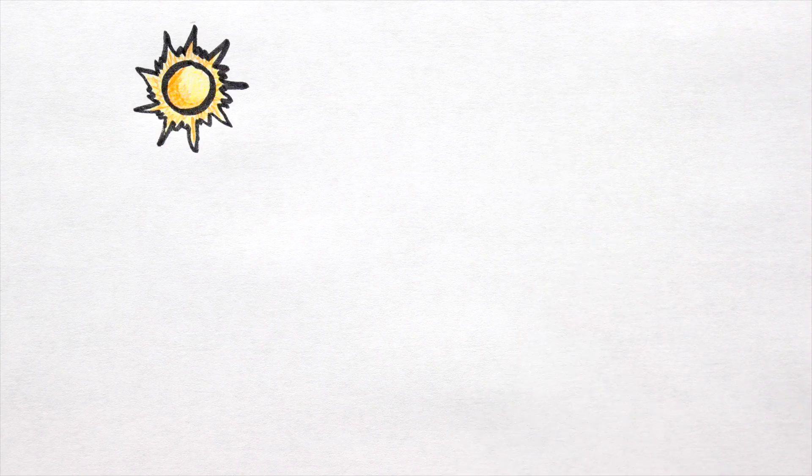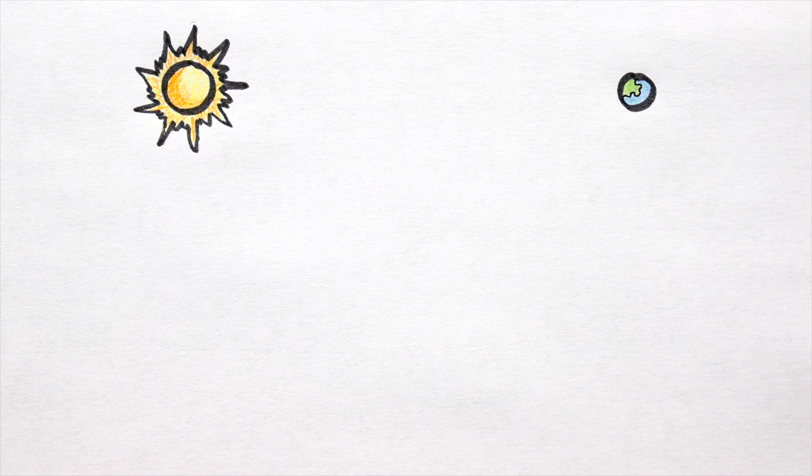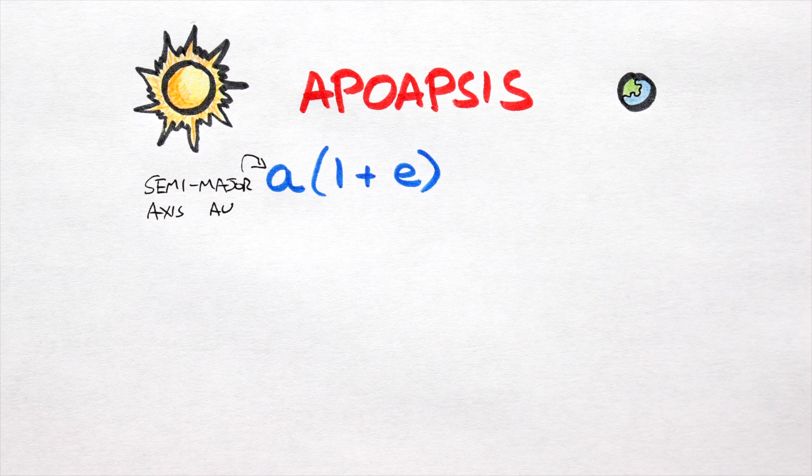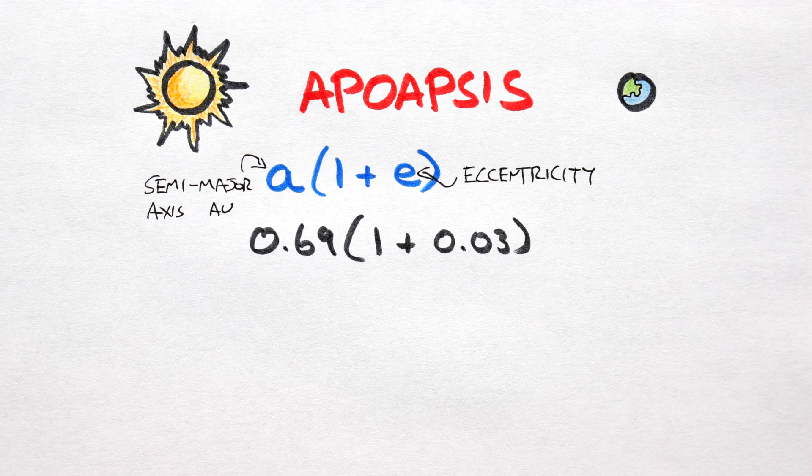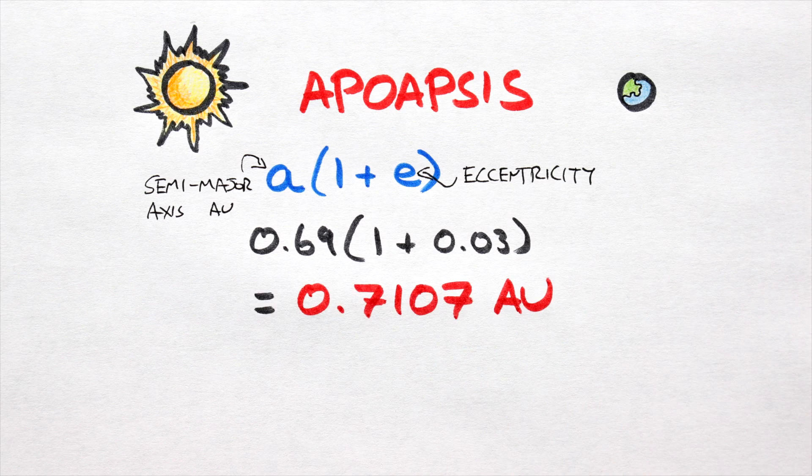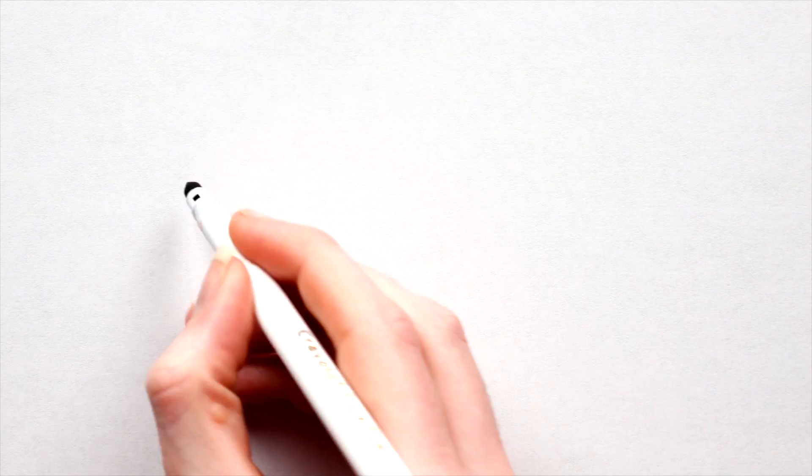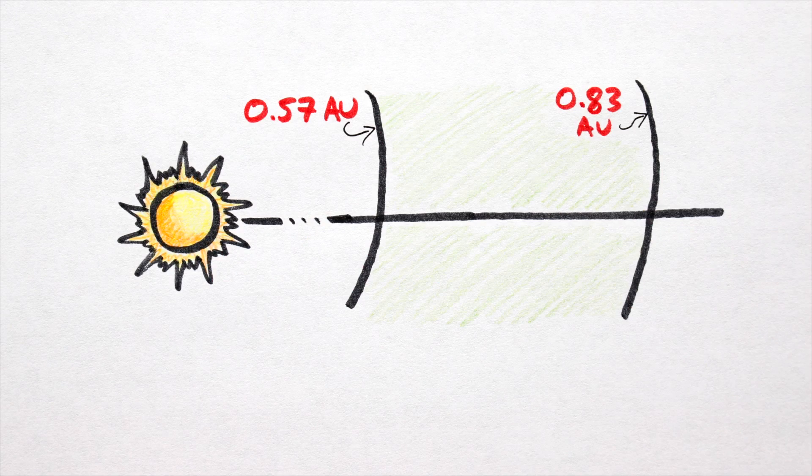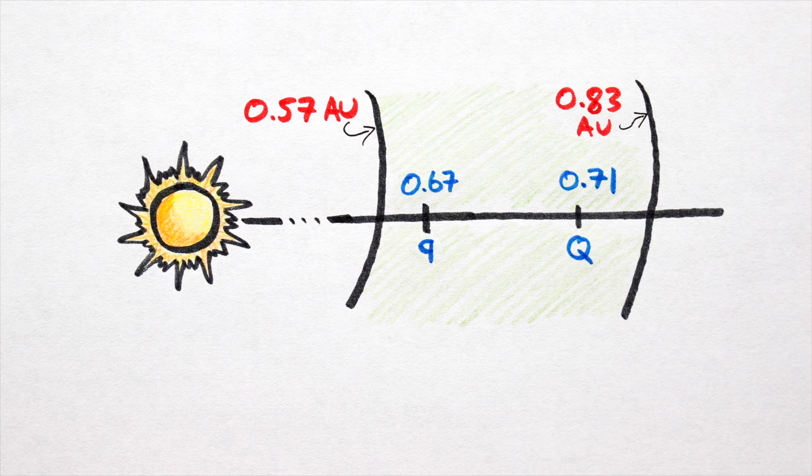The most distant point in our planet's orbit, aka the Apoapsis, is given by A, the semi-major axis, multiplied by 1 plus the eccentricity. Again, in this case, we get 0.7107 AU. With the extremes of our orbit plotted, we need to quickly double-check to see if both Apsis still fall within our habitable zone. Thankfully, they do, and we are good to proceed.